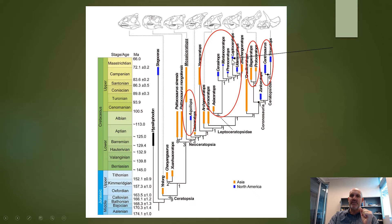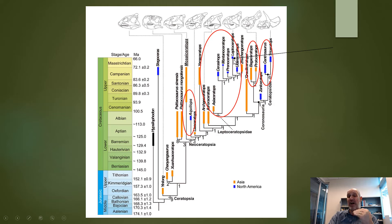If Leptoceratops is a very basal ceratopsian, what is it doing right up at the top without any fossil record below it? This group, the Leptoceratopsidae, supposedly less evolved than forms like Triceratops, should be found lower in the fossil record alongside Psittacosaurus. But they're not — they're found right at the top. Leptoceratops is a great example: very primitive, yet found right at the top. That's something interesting to keep in mind when looking at cladograms.